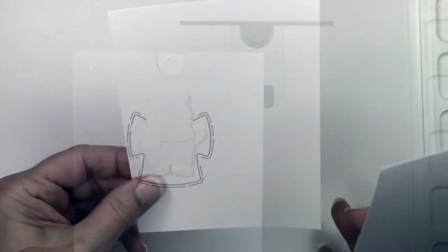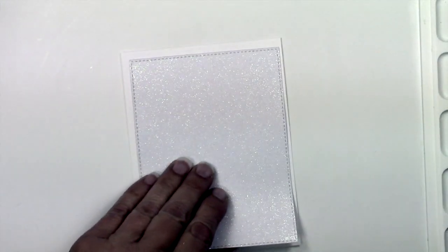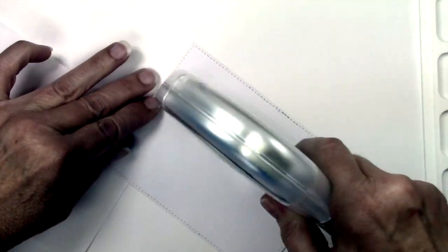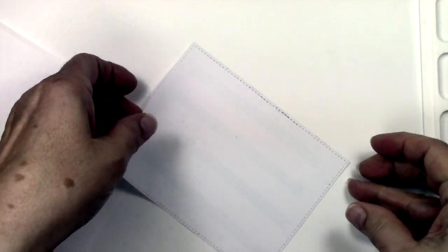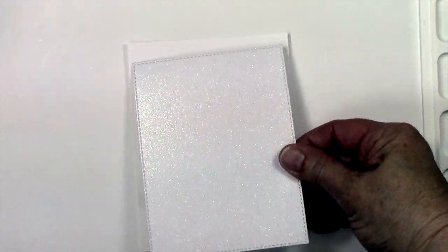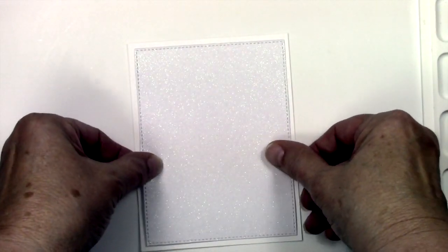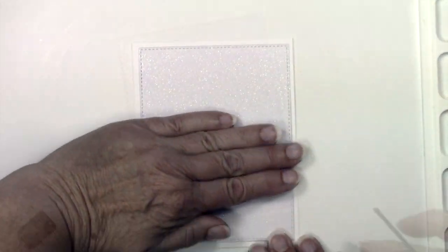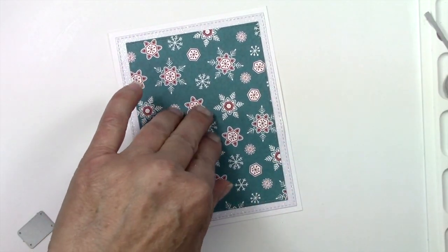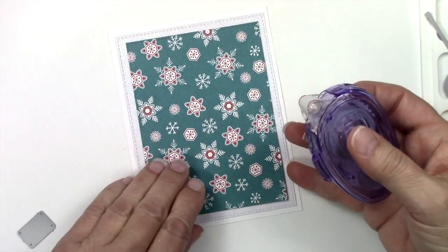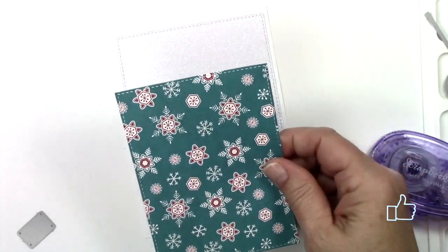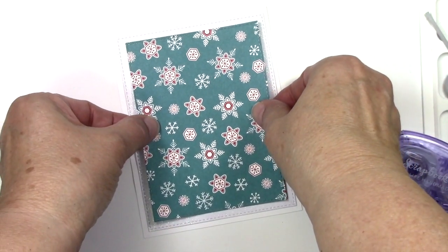We're going to start off with a piece of glitter card stock. I think this is Simon Says Stamp, but I'm not sure. I'm just going to glue it onto my panel right now. This is going to have a few layers. Then I wanted to put some color on it, so I'm temporarily adhering this top layer using temporary adhesive just to make sure I have things lined up correctly.